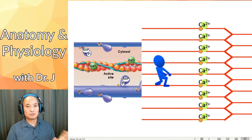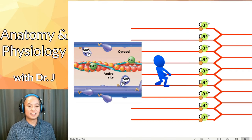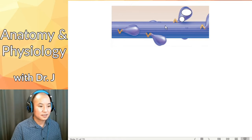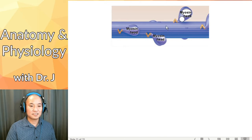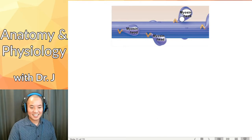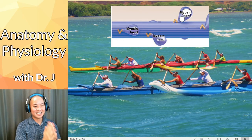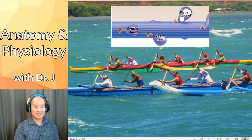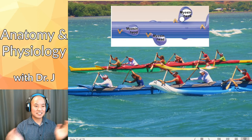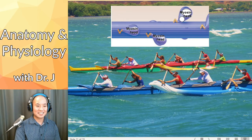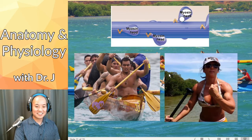Without tropomyosin blocking actin, myosin and actin can interact and myosin can pull on actin. Looking at the thick filaments, we have myosin heads. Myosin is the thick filament — I like to think of myosin heads as the heads of a paddle, like thick paddlers with all those muscles. So myosin is thick, and these heads are like little paddles.